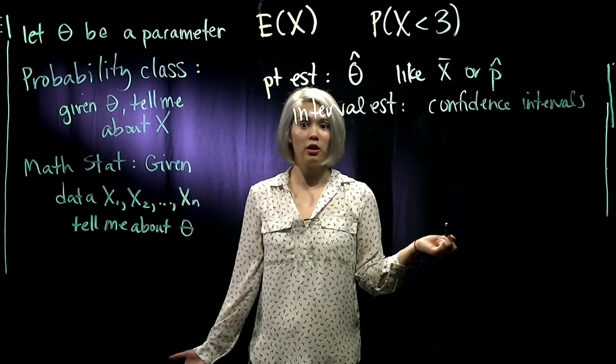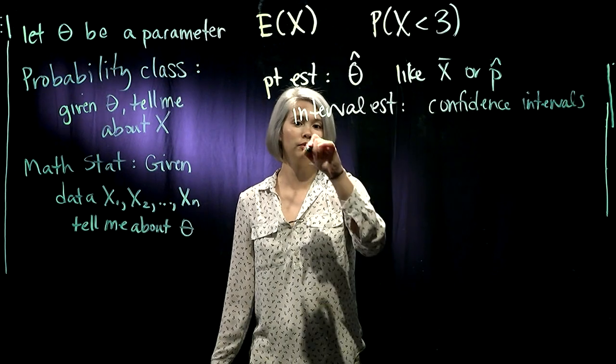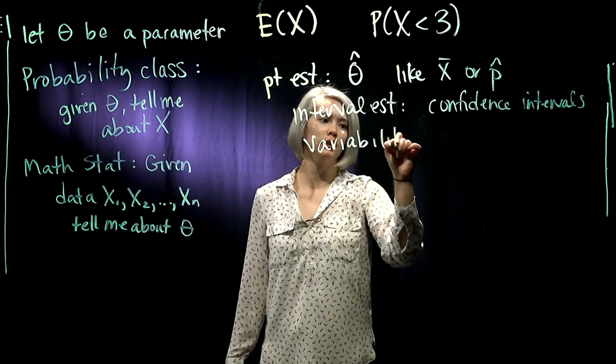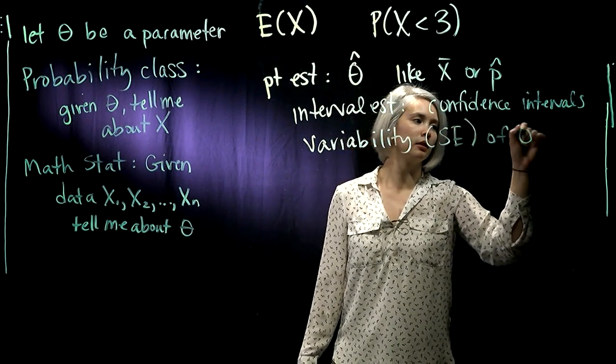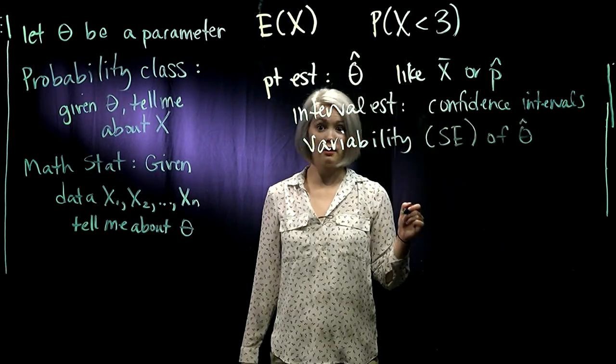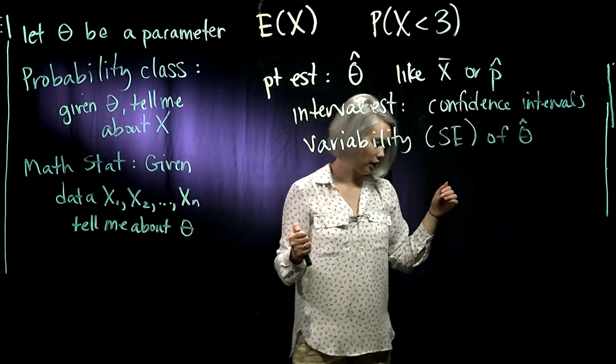Other things we might want to know about: what is the variability of θ̂? Usually we call that variability standard error. So those are some things we could be looking for.